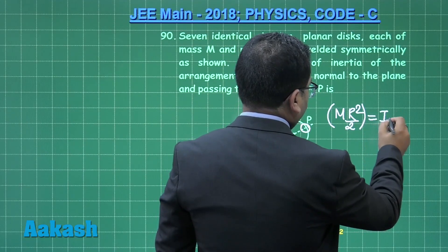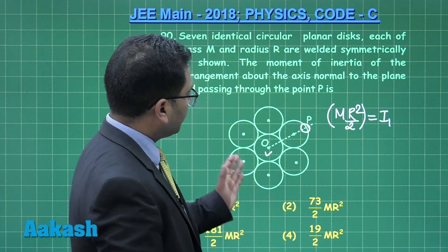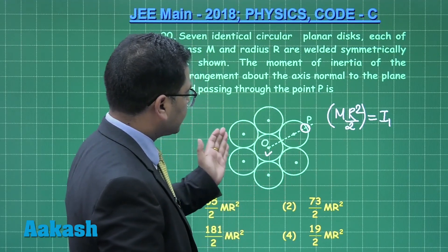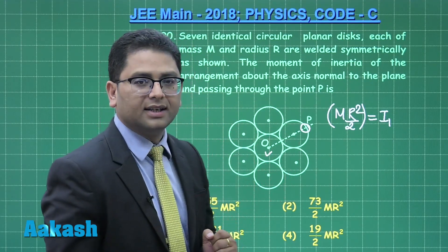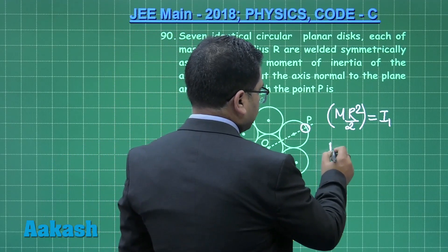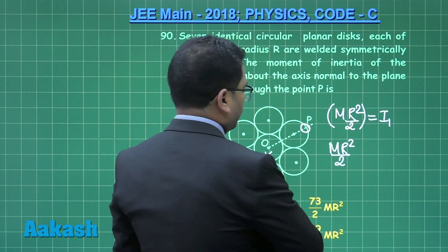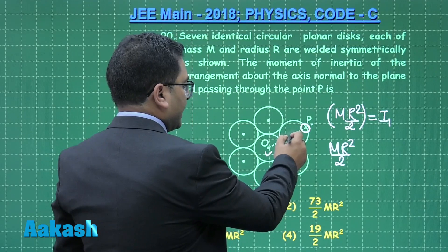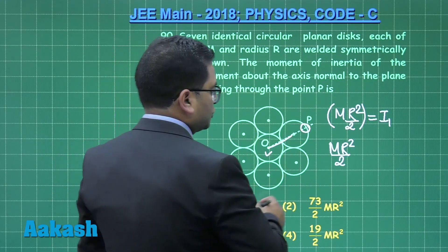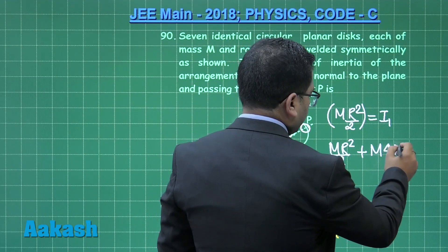Moment of inertia of this disk. Now the moment of inertia of the remaining six disks about O. Let's see, and that is, you see, of the one. If I find that is mr²/2 of one disk.